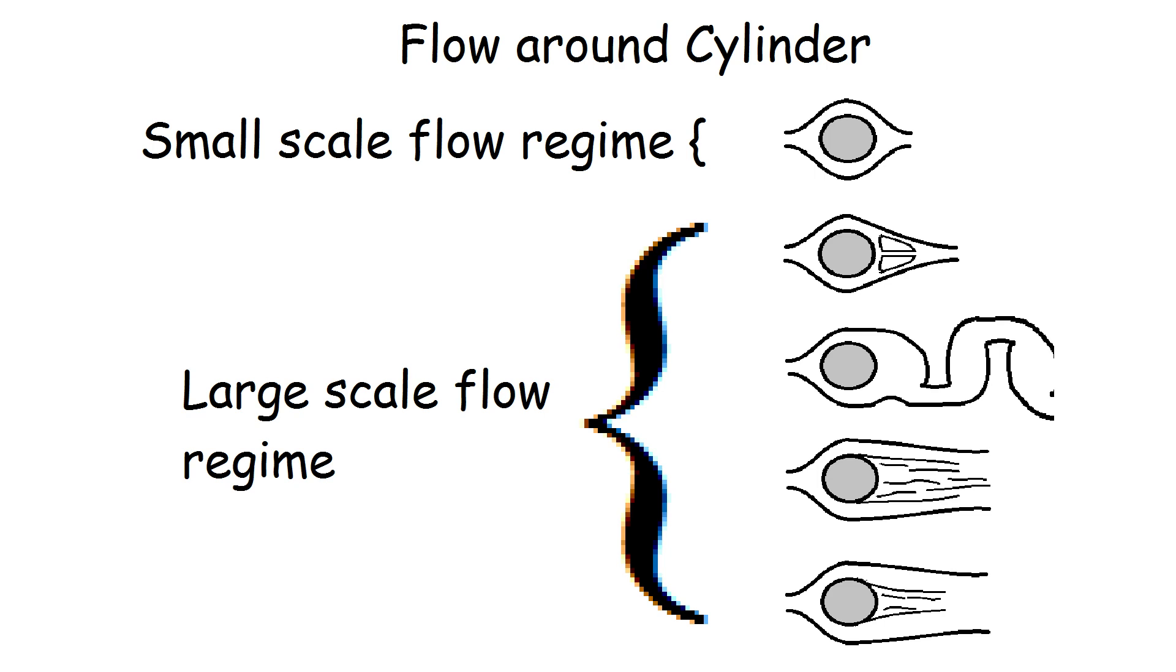In the small-scale flow regime, the flow is small enough for surface effects of the fluid to affect the motion of the fluid, while in the large-scale flow regime, the motion of the fluid is ruled by the inertia of the fluid due to the large flow rate.